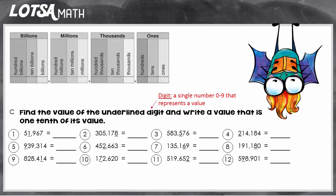You're going to find the value of the underlined digit, and a digit is just a single number, zero through nine, and then you're going to write a value that's one-tenth of the original value.